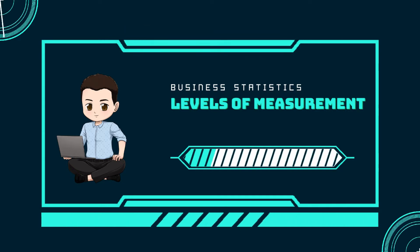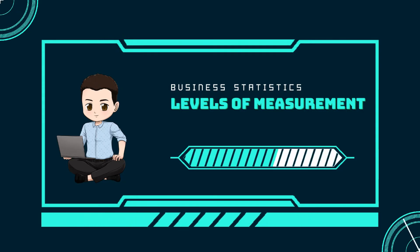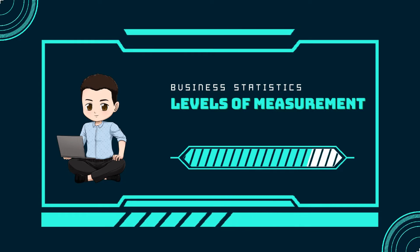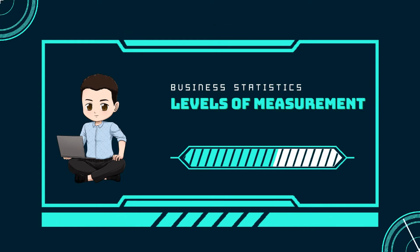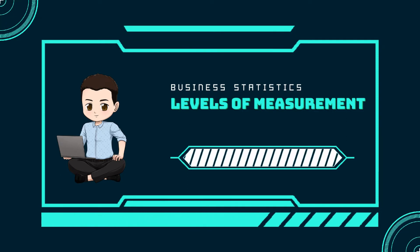Another example of ordinal scale is a cruise survey, where the responses to questions about the cruise are excellent, good, satisfactory, and unsatisfactory. These responses are ordered from the most desired response to the least desired. But the differences between two pieces of data cannot be measured. Like nominal scale data, ordinal scale data cannot be used in calculations.